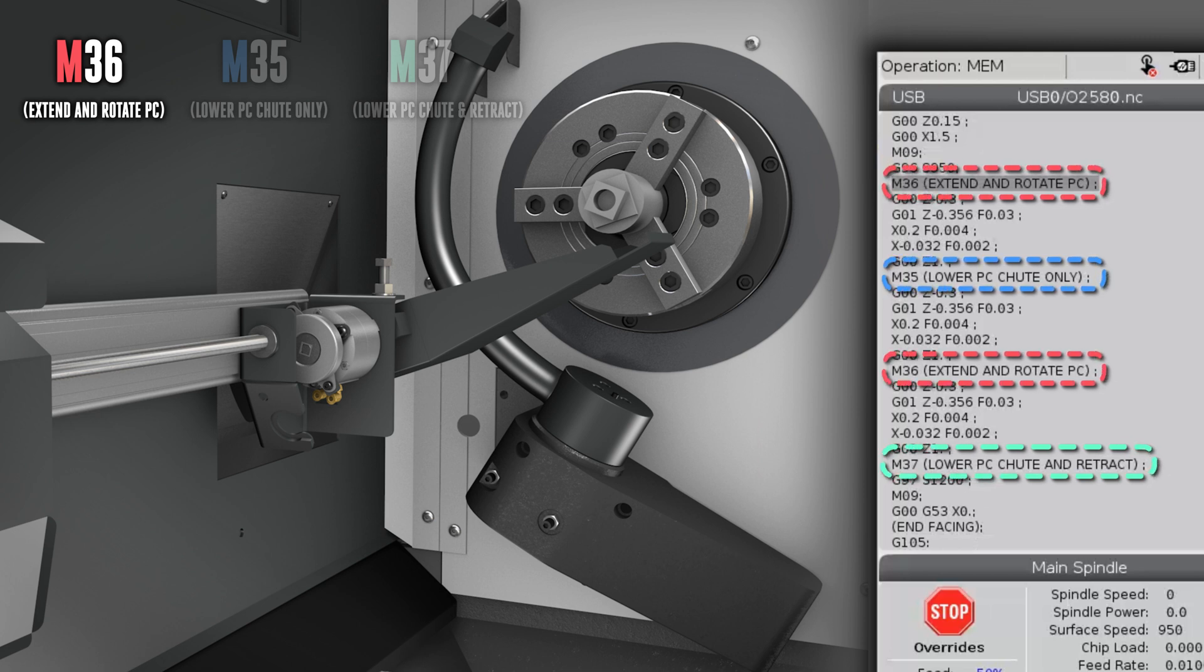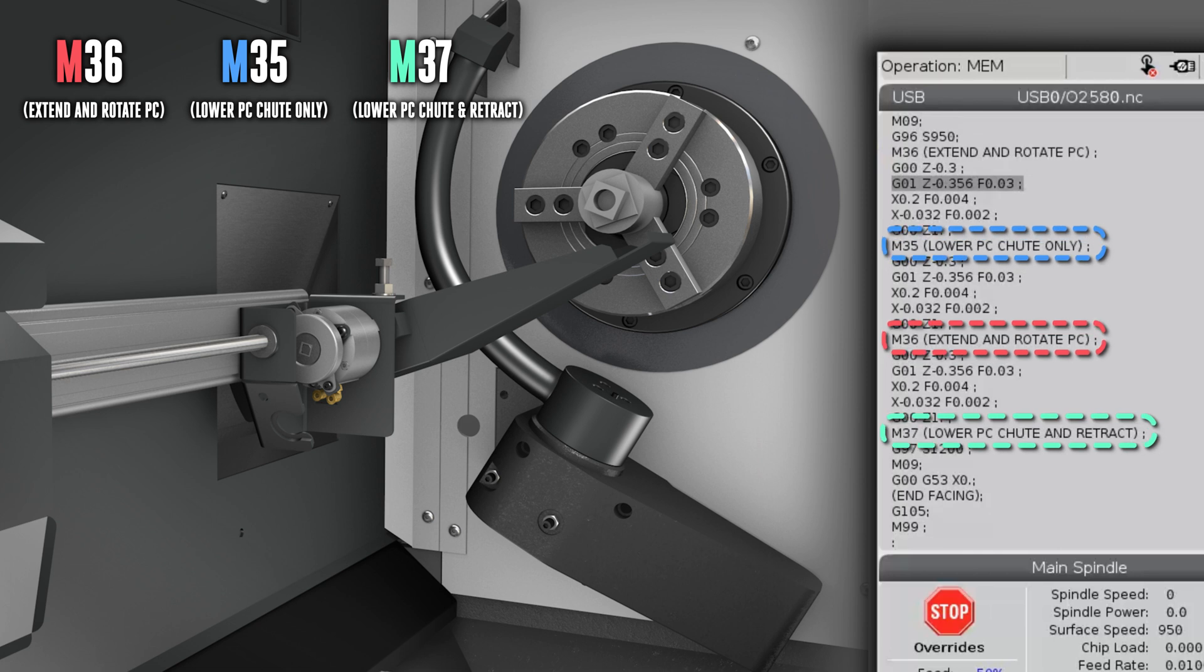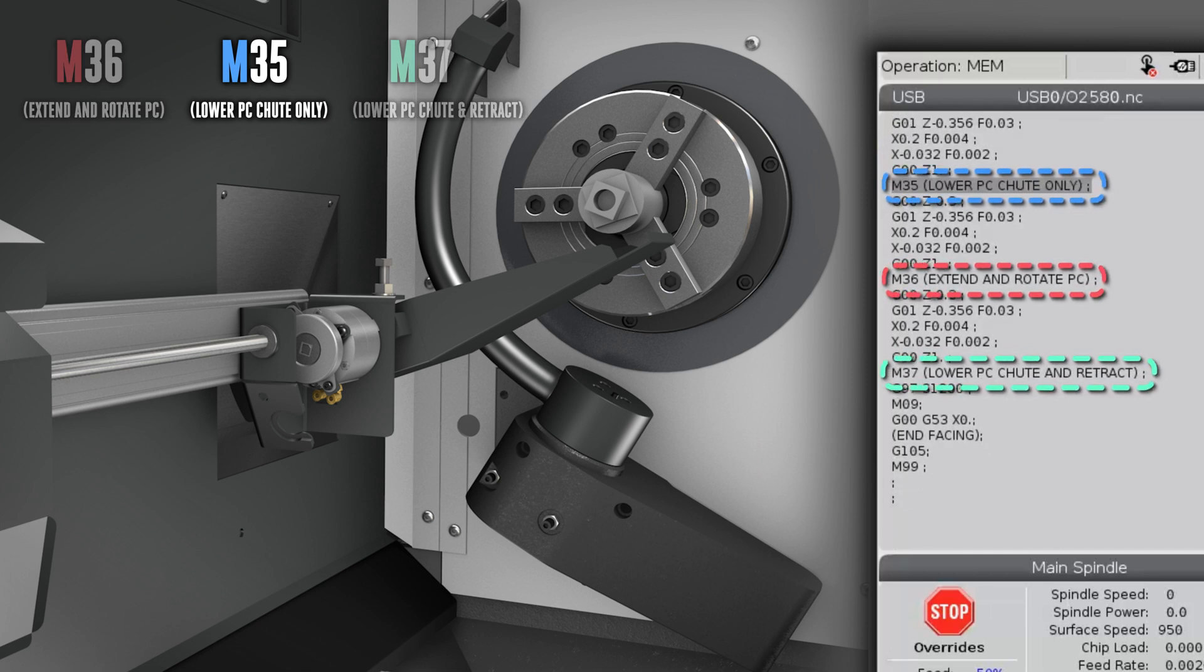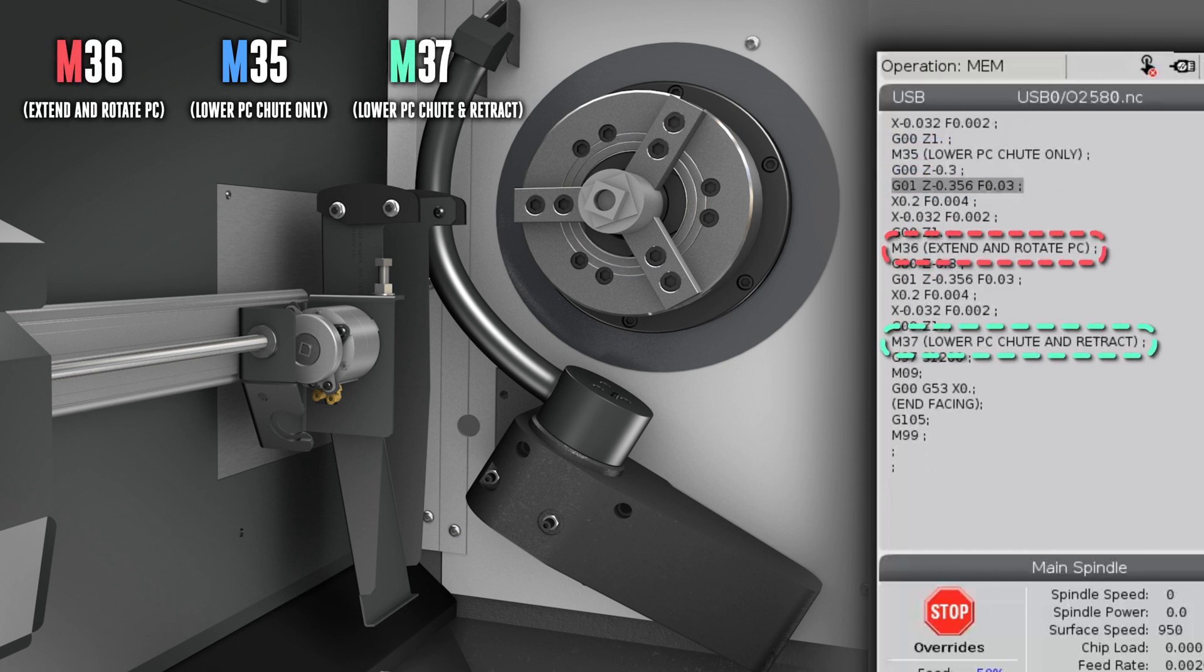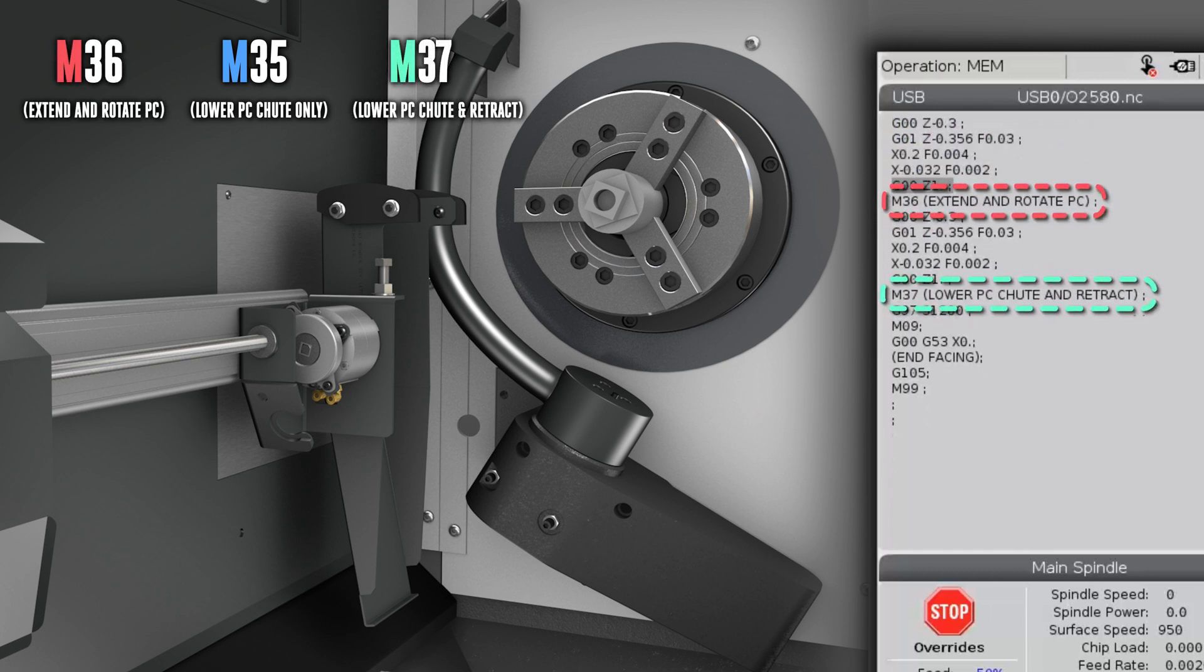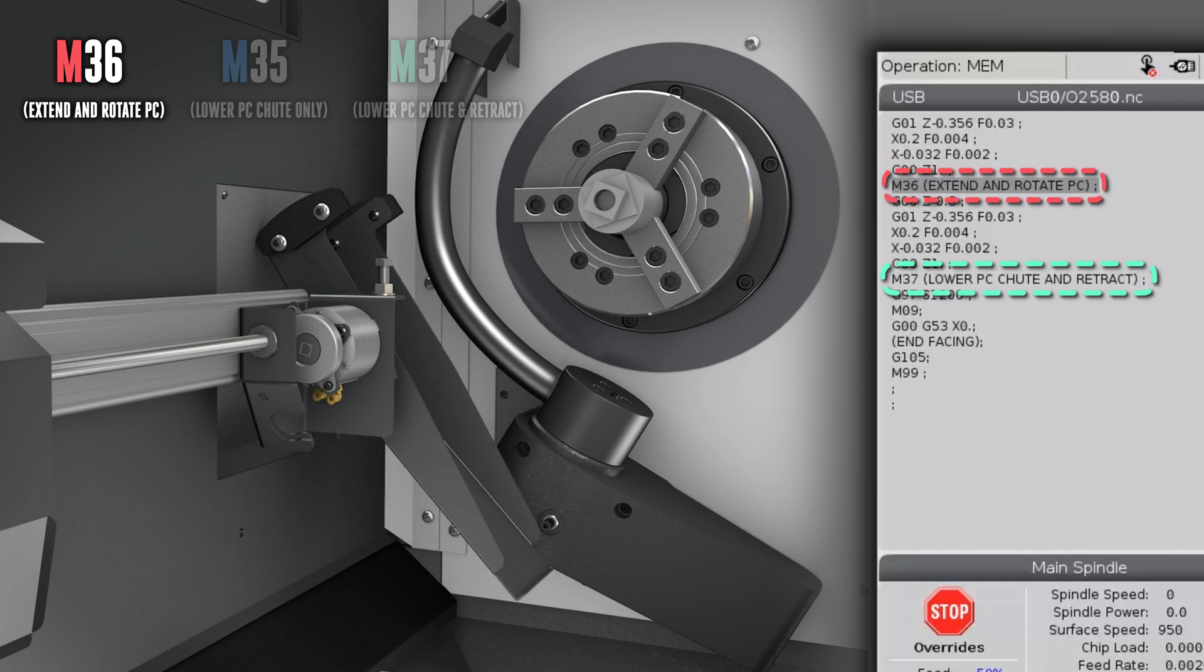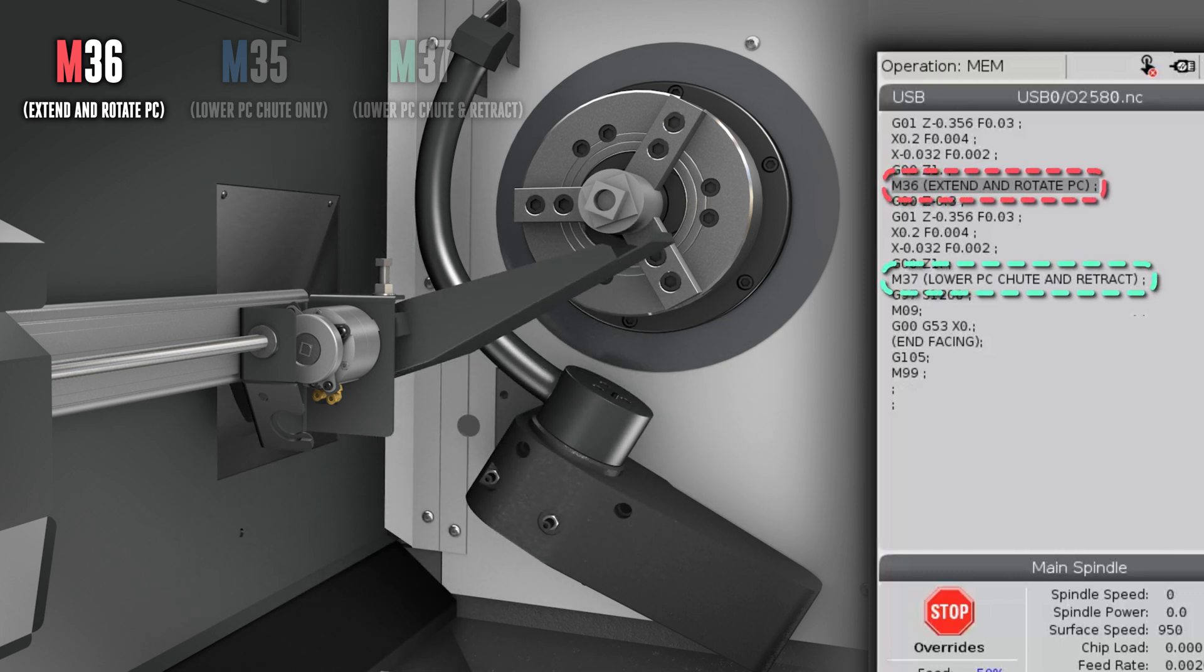If you are parting off multiple parts quickly, you can leave the parts catcher deployed and use M35 to rotate the chute downwards while waiting for the next part-off cut. Then call M36 again to bring the chute back up right before the next part-off.